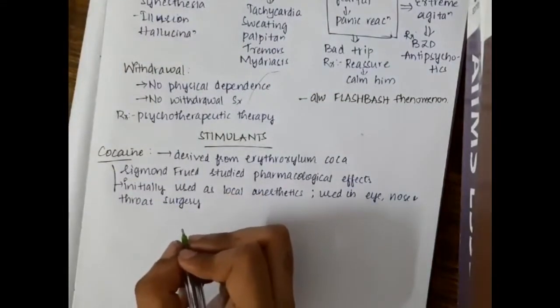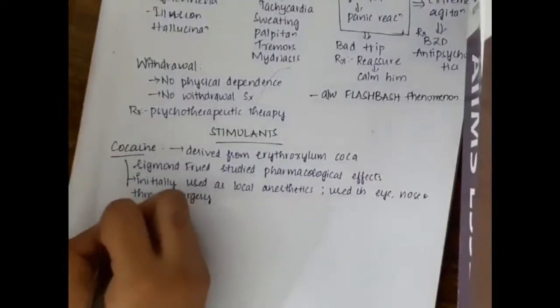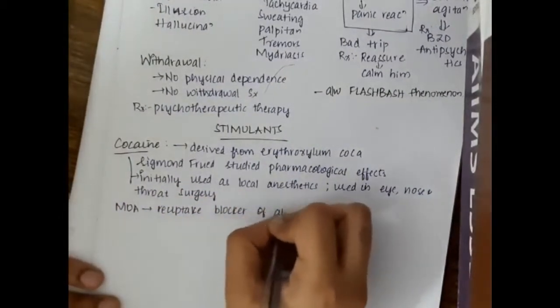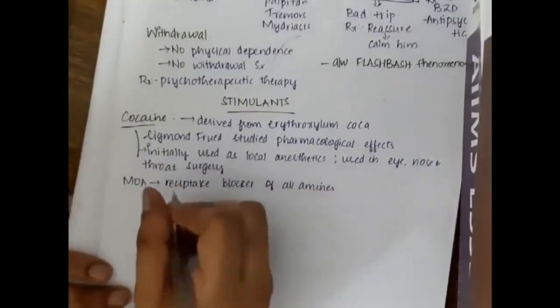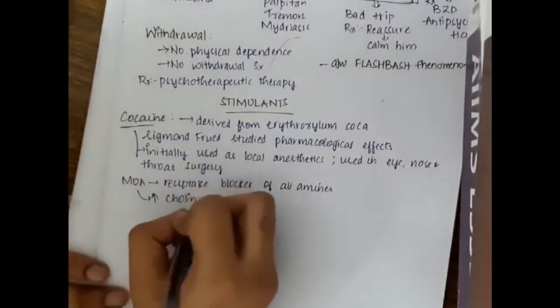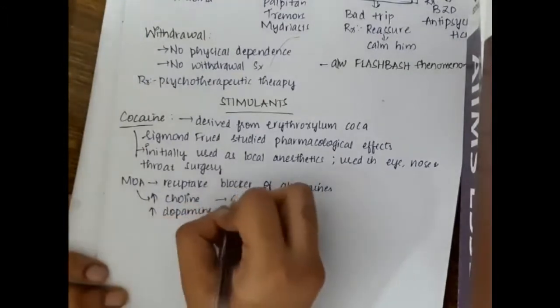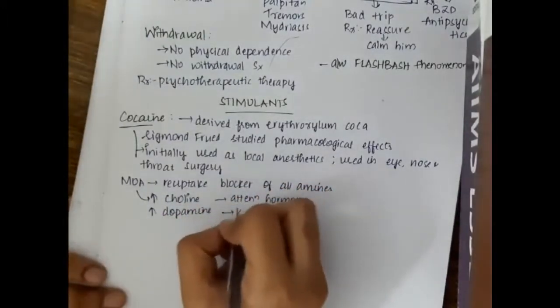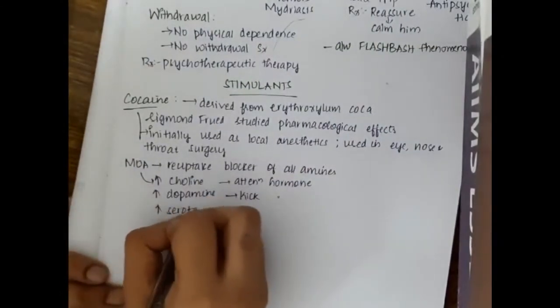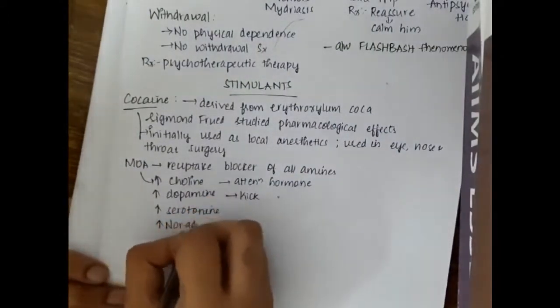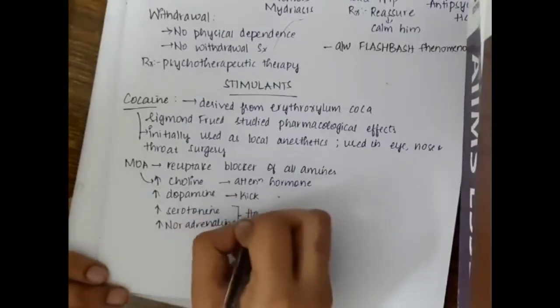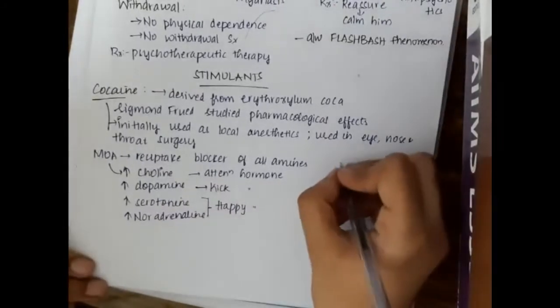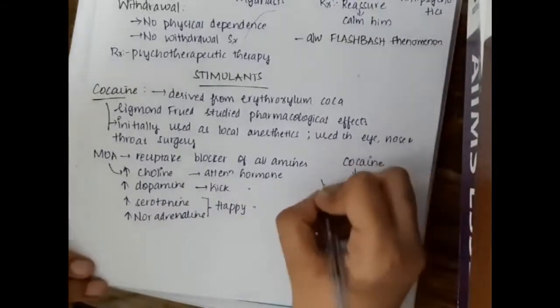The mechanism of action of cocaine is very important. Cocaine is a reuptake blocker of all the amines. It increases the uptake of dopamine, which is a kick hormone. It increases serotonin and noradrenaline uptake, which are happy hormones. So this cocaine gives very good effect.